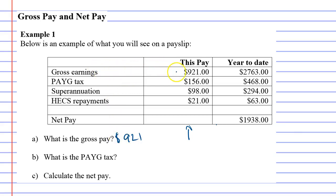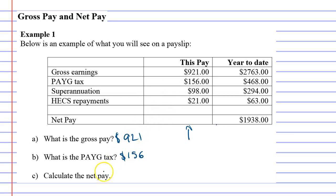The next question says: what is the PAYG tax? The PAYG tax is $156. What that's telling you is if you make $921 for your pay, then the government will charge you $156 in tax. This is just an estimate of what would be owed.